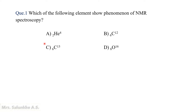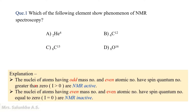The magnetic nature depends upon atomic number and atomic mass. In case of atoms having even mass number and even atomic number, the nuclei have spin quantum number equal to 0, and such nuclei are non-magnetic and NMR inactive. Nuclei of atoms with odd mass number have spin quantum number greater than 0; they are magnetic in nature and NMR active.